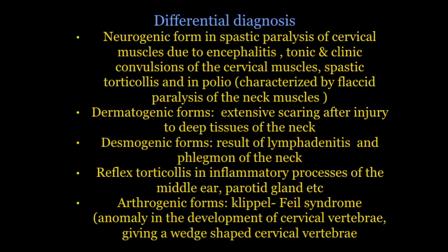Firstly, neurogenic forms of torticollis, which present as spastic paralysis of cervical muscles due to encephalitis. As a complication of encephalitis, there are tonic and clonic convulsions of the cervical muscles — spastic torticollis. In polio, this type of torticollis is characterized by flaccid paralysis of the neck muscles.